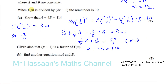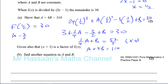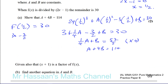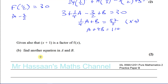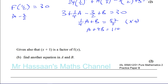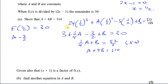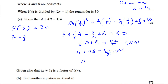Since this is a 'show that' question, it's important to show our steps clearly. Multiplying through by 4: a + 4b = 57/2 × 4. That cancels to give a + 4b = 2 × 57 = 100 + 14 = 114. And there we have what we were asked to show.